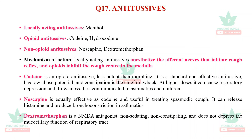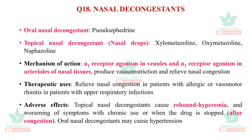Question eighteen is nasal decongestants. The oral nasal decongestant is pseudoephedrine. Topical nasal decongestants available as nasal drops include xylometazoline, oxymetazoline, and naphazoline. They activate alpha-1 receptors in venules and alpha-2 receptors in arterioles of nasal tissues, producing vasoconstriction and relieving nasal congestion. They relieve nasal congestion in patients with allergic or vasomotor rhinitis and upper respiratory tract infections. Topical nasal decongestants can cause rebound hyperemia and worsening of symptoms with chronic use, known as rhinitis medicamentosa. Oral nasal decongestants may cause hypertension.